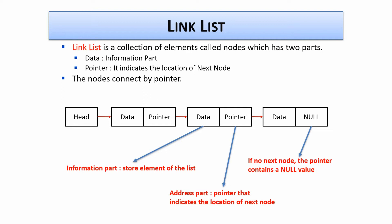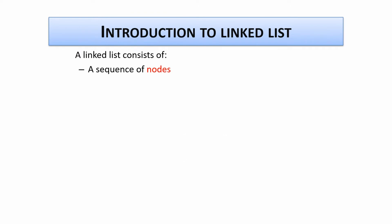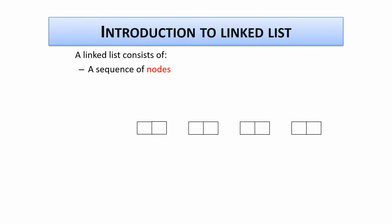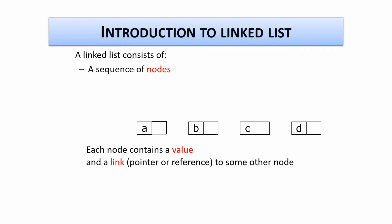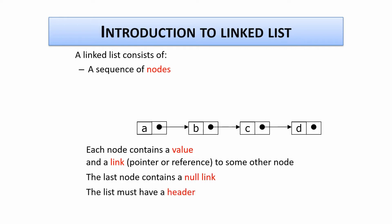The data is the information part. Here in our example, roll number is the information. So we can say that a linked list consists of a sequence of nodes. Each node contains a value — for example a, b, c and d — and a link to another node. The last node contains a null link and the list must have a header. So here, a is the header.